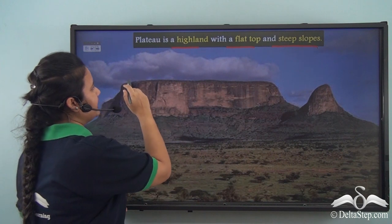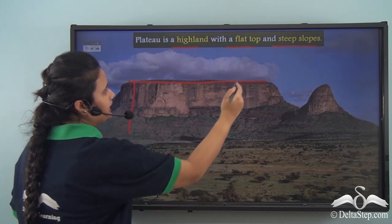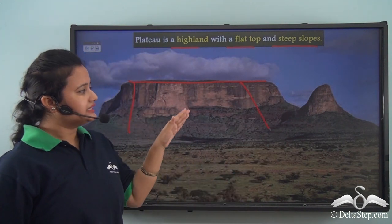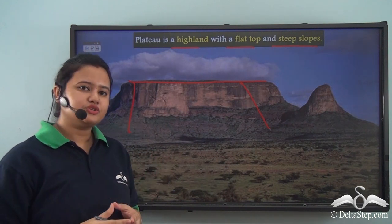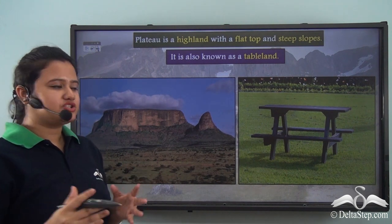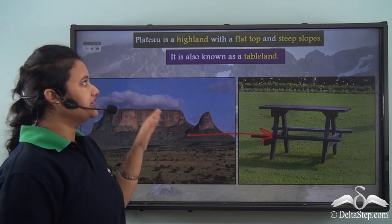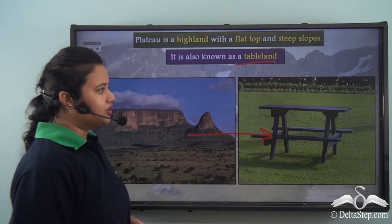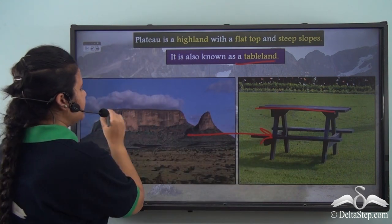Can you link this landform with any object you see around you? Yes, a plateau looks like a table, and due to this reason a plateau is also known as a tableland, because it has a flat top with steep edges, just like a table.